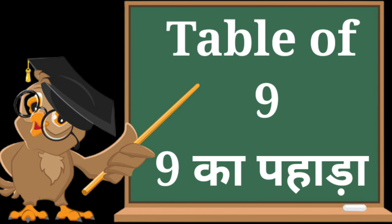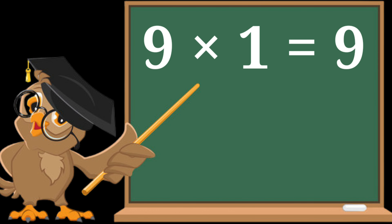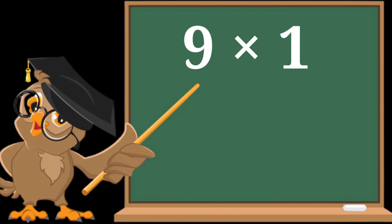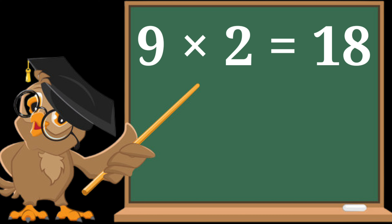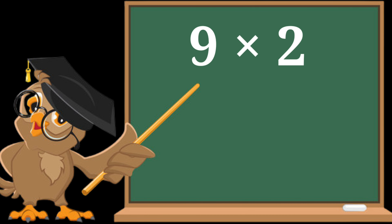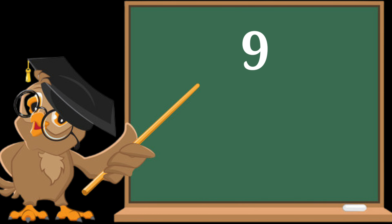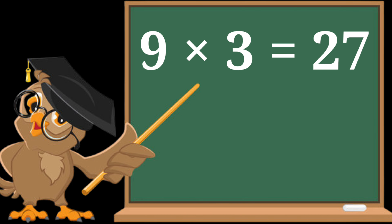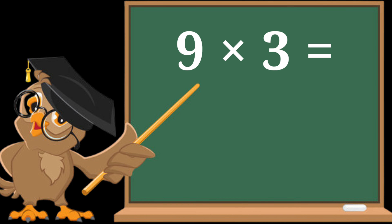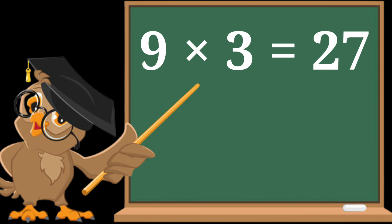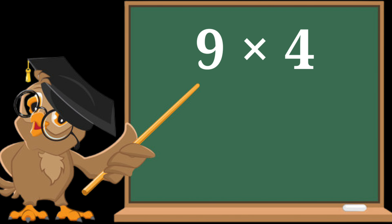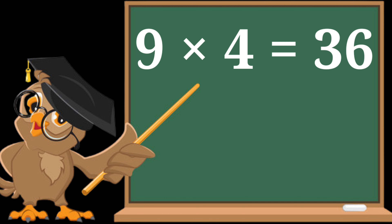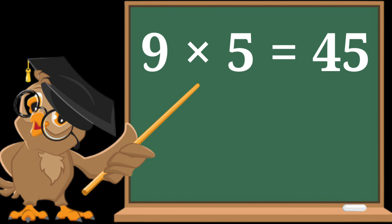Table of Nine. Nine ones are nine. Nine twos are eighteen. Nine threes are twenty-seven. Nine fours are thirty-six.